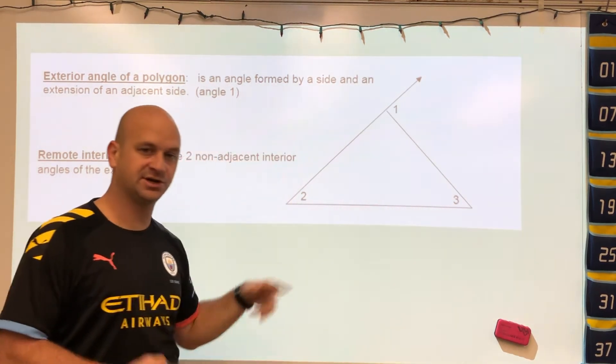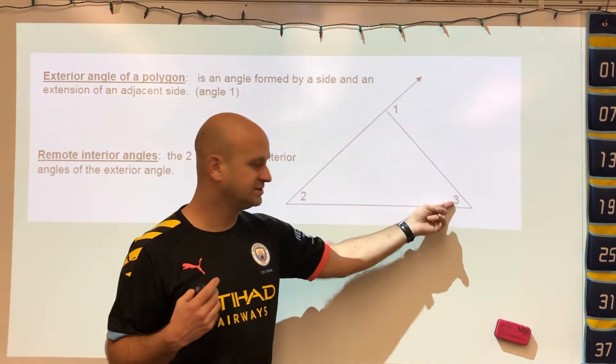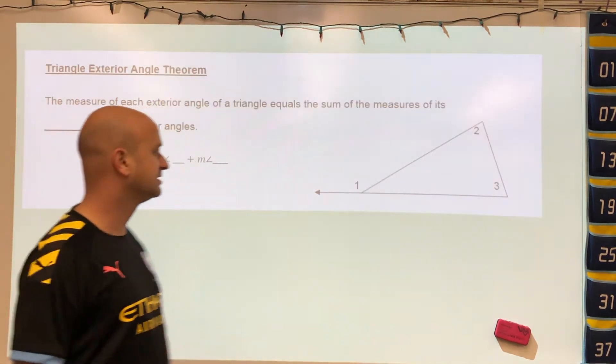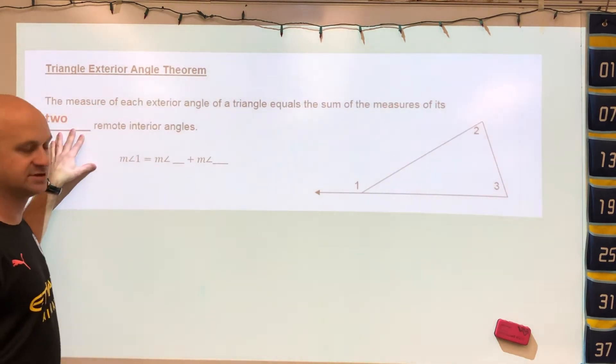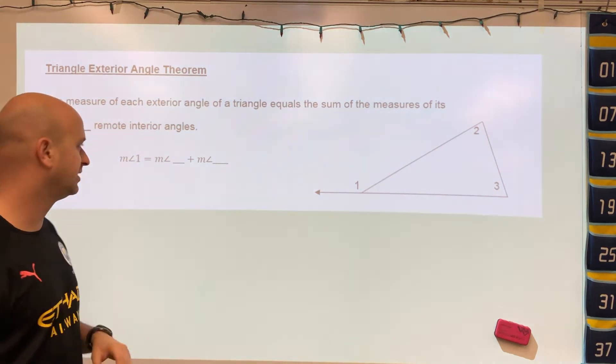If you look at the two interior angles of the triangle that is not connected to it, if you add up these two angles it would equal to this. That's what we have here: the exterior angle is the sum of the two remote interior angles.